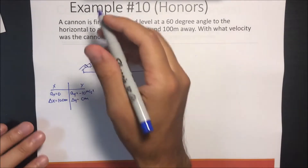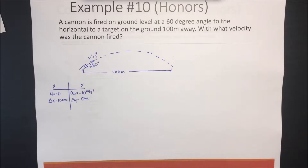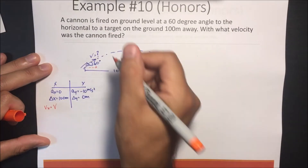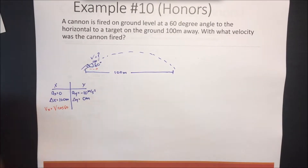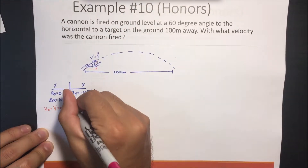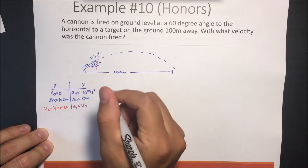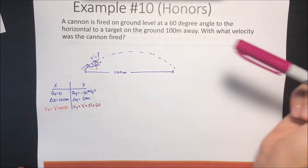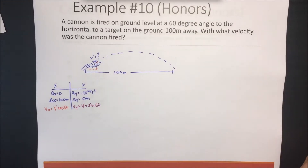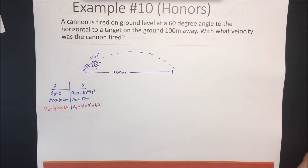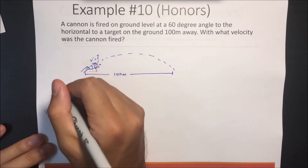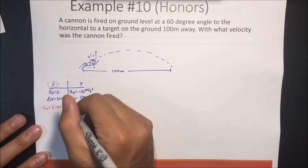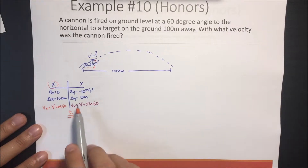What we're looking for is this velocity V. We should know that the velocity in the x-direction equals V times cosine of 60, and the velocity in the y-direction equals V times sine of 60. Even though we don't know these values yet, we can use substitution later. First, I'll find everything in the x-direction and then substitute into the y-direction. The key insight is that time is the same for both directions.